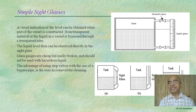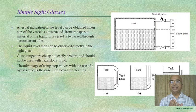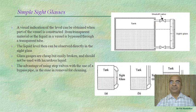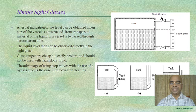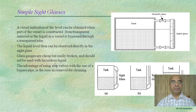The first method is simple sight glasses, by which we can visually check and measure the level of liquid. The figures indicate how it is done: a liquid tank has a sight glass mounted on the side, graduated with a scale, so we can check what is the level of the liquid in the tank.